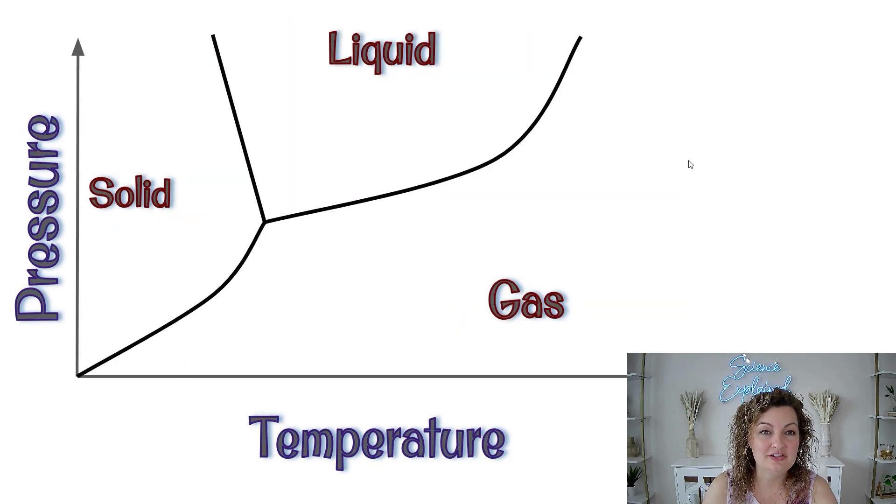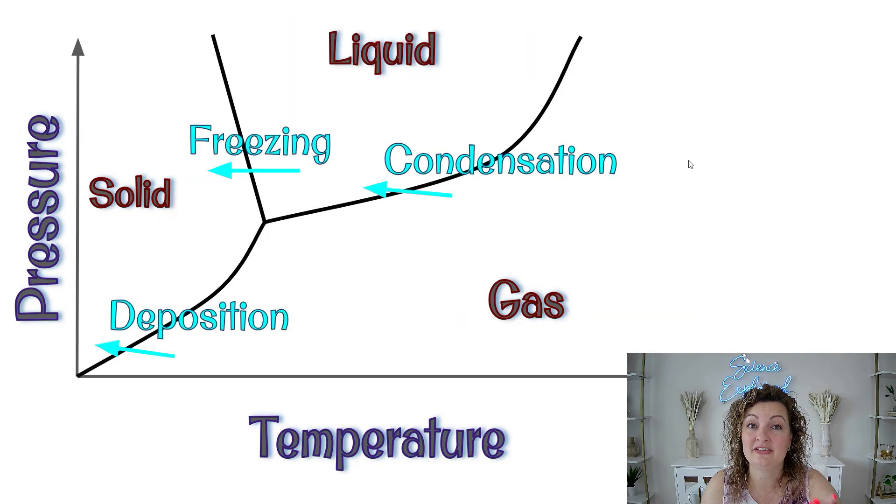Now let's go ahead and look at what we do when we cross these lines. So you can see if I go from a gas to a liquid and I cross this line, no matter where it is, that's going to be condensation. From a liquid to a solid, it doesn't matter where on this line I'm crossing, I'm going to be freezing.